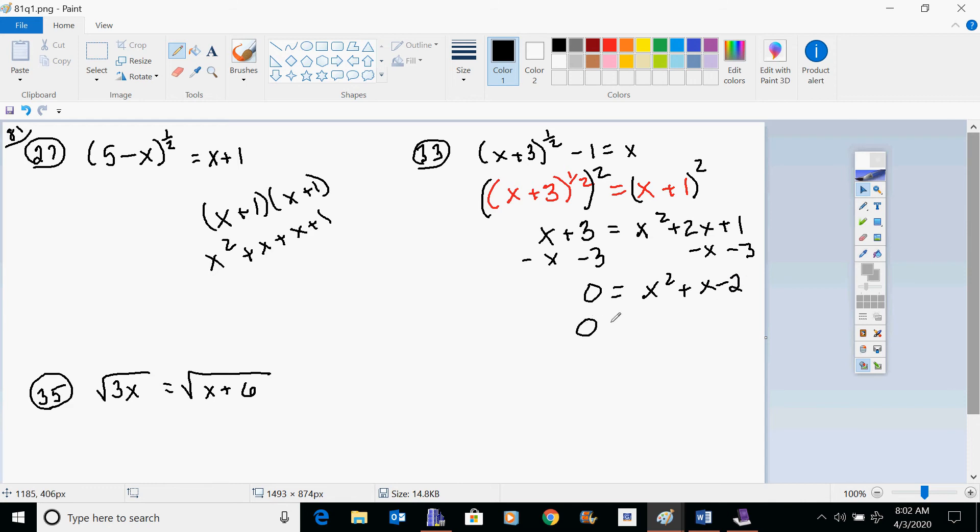So that you're left with 0 equals x squared plus x minus 2. If we factor this thing out, negative 2 and 1 or 2 and negative 1 actually give you this. So positive 2 and negative 1 will give you that 1 in the middle. So that would give you that x equals negative 2 or x equals 1.